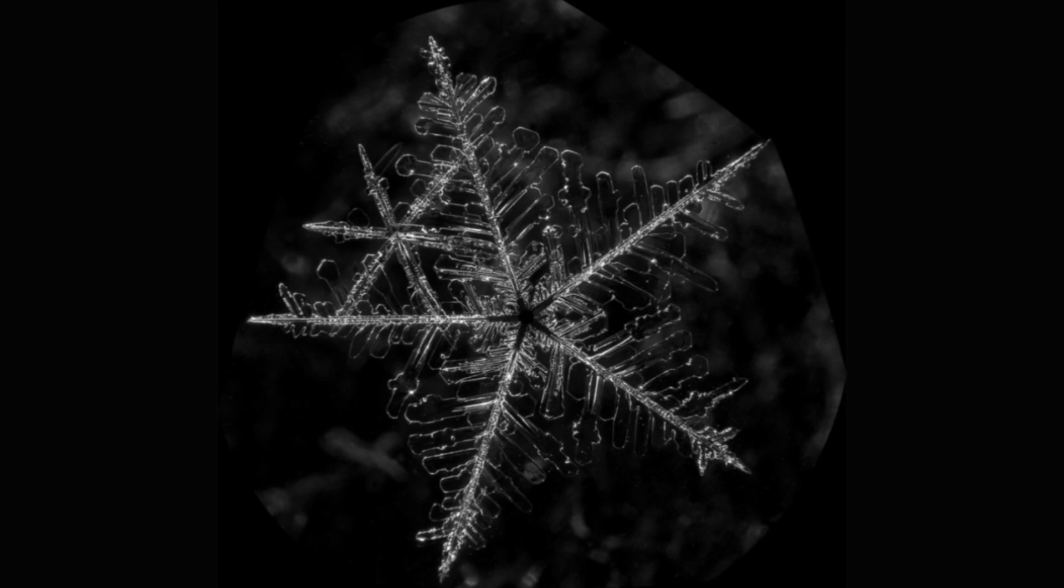Fulgurites form when lightning hits sand, fusing together the grains in a gnarly, branching tube of glass. Bindi collected multiple fulgurites in his search for quasicrystals. The one that held this rare form of matter came from the sandhills of Nebraska, near the village of Hyannis.